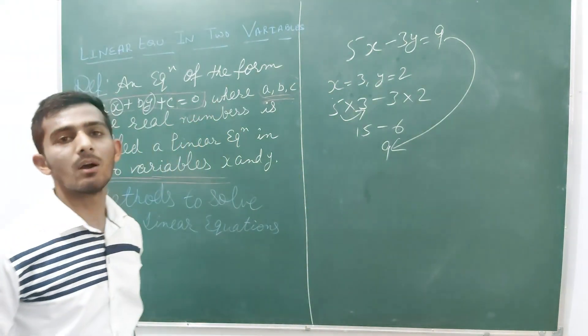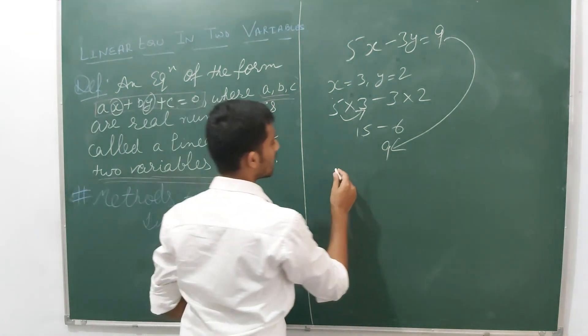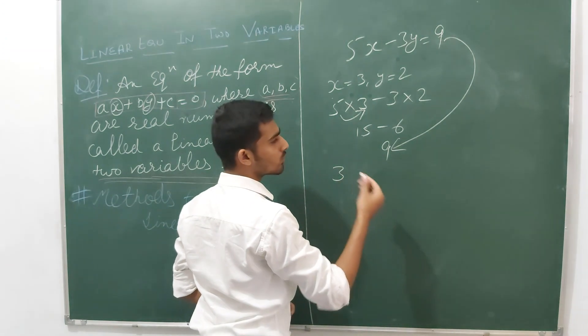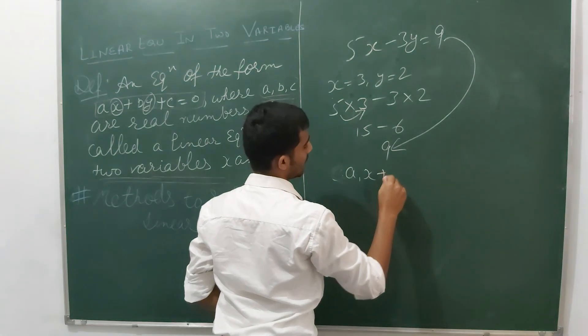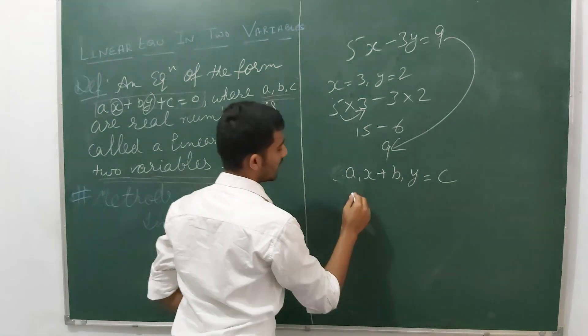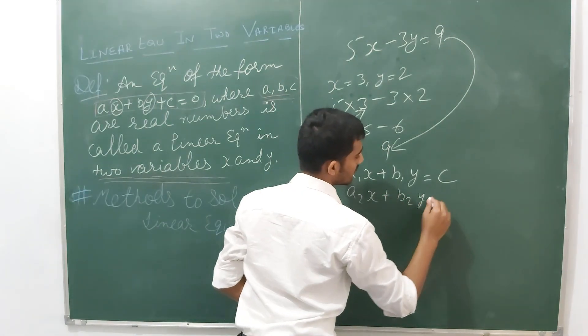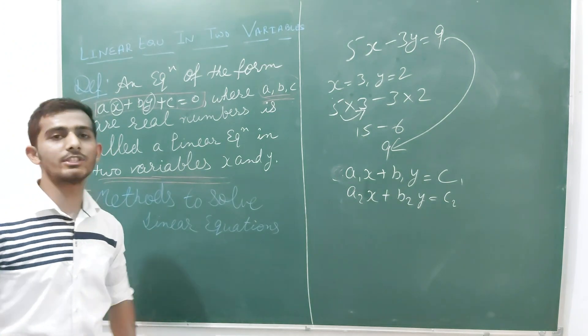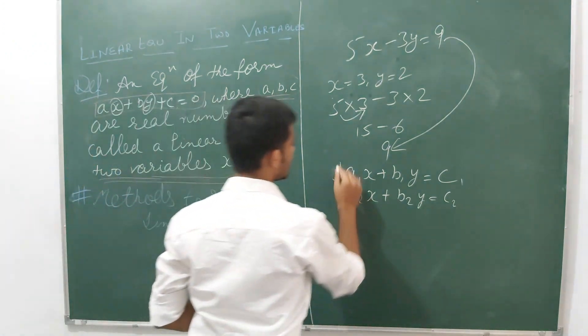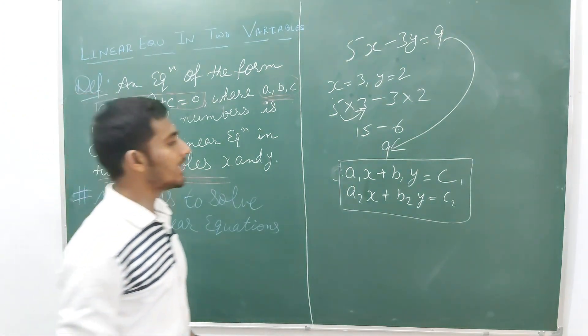But what happens now? What happens with two variables? We have given two equations like a1x plus b1y equals c1 and a2x plus b2y equals c2. So you have been given this type of two equations.